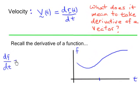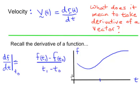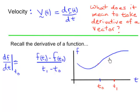The derivative of this function, from the definition, is this quotient. On the top we have f evaluated at t0 and t1 — t0 is the point where we're taking the derivative, t1 is some point in the future. What we do is evaluate f at these two different points: f at t0 and f at t1. Then we take the difference f(t1) minus f(t0).